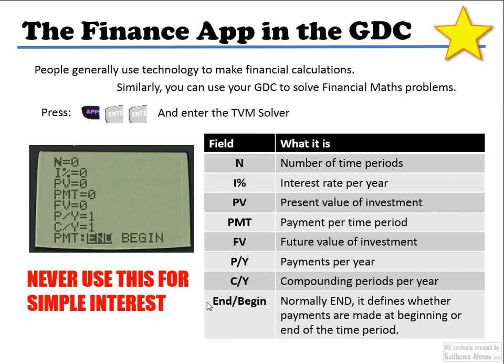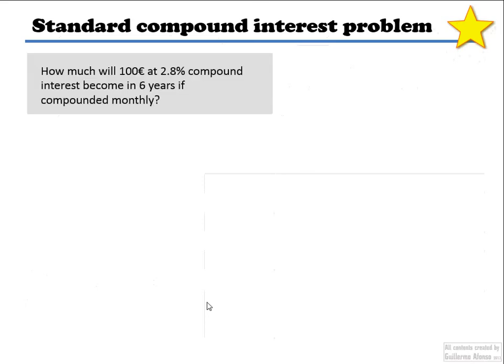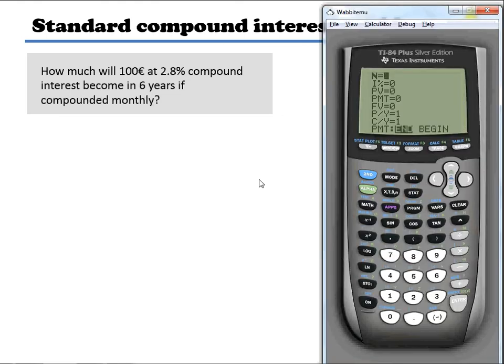So here's a simple example of compound interest. Just our typical compound interest problem using this TVM Solver. So I have a hundred euros at 2.8 percent compound interest compounded monthly for six years. So the number of time periods is not going to be six. It's not the number of years. It's going to be six times 12. It's going to be 72. I can do the multiplication in the slot itself. I can just put six times 12 there and it's going to calculate it for me. You have to keep in mind the number of times in which something is going to be happening.